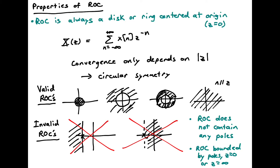The ROC is always a disk or ring centered at the origin, because convergence of the summation only depends on the absolute value of Z, giving circular symmetry in the complex Z-plane. Valid regions of convergence include inside some radius, outside some radius, a doughnut shape, or all Z — all having this circular symmetry.